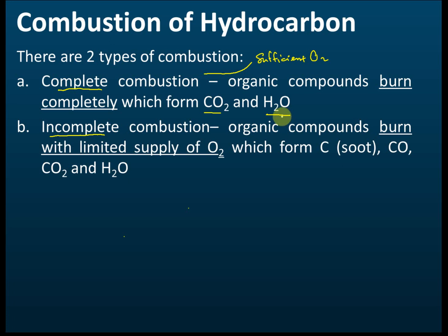Incomplete combustion happens when there is a limited supply of oxygen, meaning the oxygen supply is not enough. The products of incomplete combustion include carbon, also called soot — the black smoke produced during combustion — as well as carbon monoxide, which is a poisonous gas, and also carbon dioxide and water.